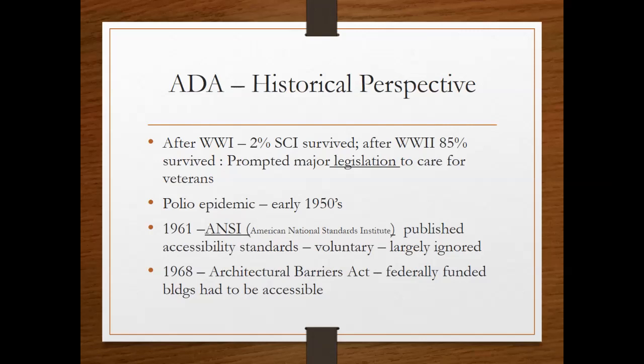In 1968 came the Architectural Barriers Act, where they decided to put some teeth behind those ANSI accessibility standards — meaning that if you receive federal funds to build a facility or structure, the buildings had to be accessible from that point forward. This did not cover private buildings or private homes, but anything that received federal funds had to be accessible.